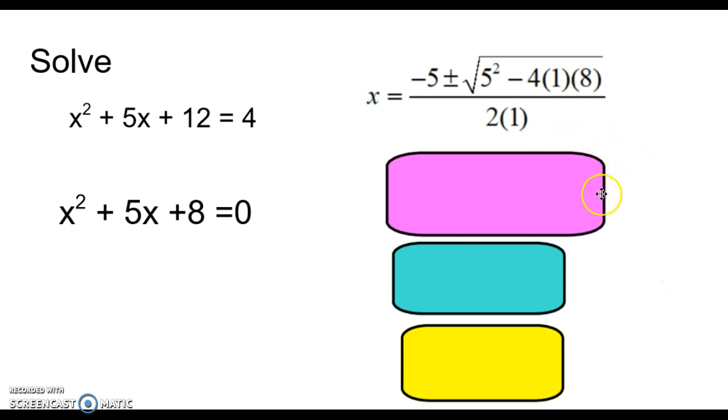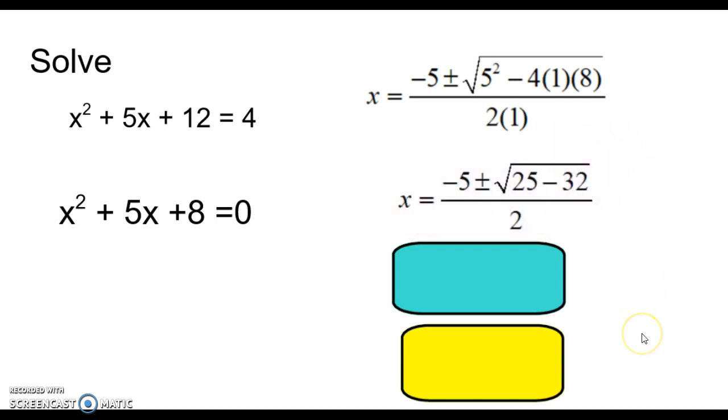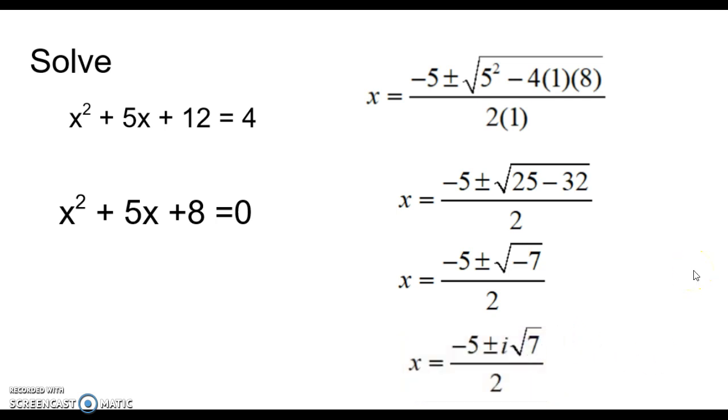And then we have to simplify those numbers. It's going to leave us with this. And then we subtract underneath the radical. We get that. That's not our final answer because we're not allowed to have a negative underneath the radical sign. Take out that negative as an i and there's your final answer.